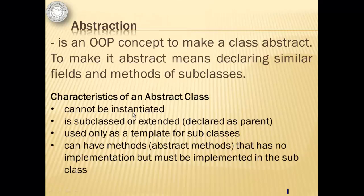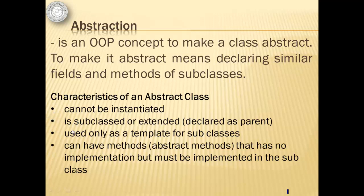Abstraction is an OOP concept to make a class abstract. To make it abstract means declaring similar fields and methods of subclasses. Like a normal class, an abstract class has a constructor and the mentioned fields and methods. Furthermore, it cannot be instantiated, meaning you cannot declare an object for an abstract class. It is subclassed or extended, meaning it should always be declared as a parent. It is used only as a template for subclasses, and it can have methods called abstract methods that have no implementation but must be implemented in the subclass.